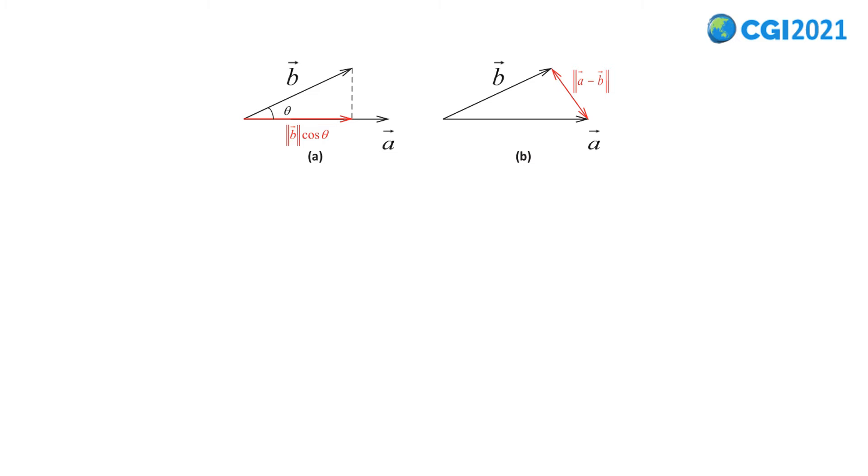Apart from inner product, Euclidean distance can also be used to calculate similarity. Contrary to inner product, the more similar two vectors are, the smaller Euclidean distance between them is. That is, the similarity of vectors and Euclidean distance show negative correlation. So when Euclidean distance is selected to describe similarity, a minus will be introduced. Therefore, lambda minus Euclidean distance is used to represent the similarity, where lambda is the threshold.